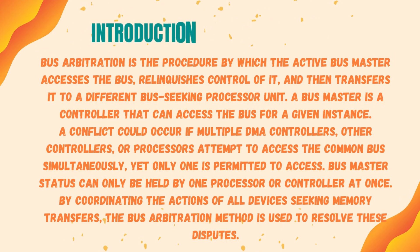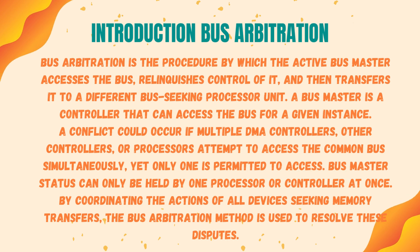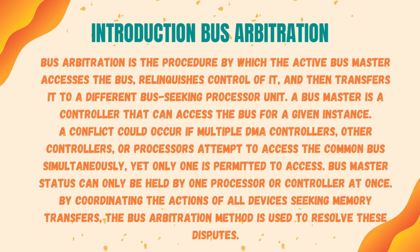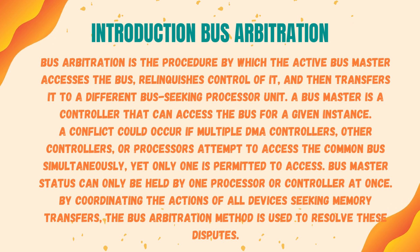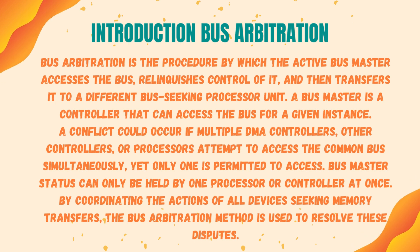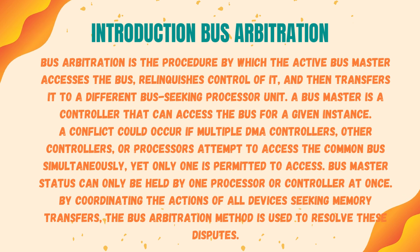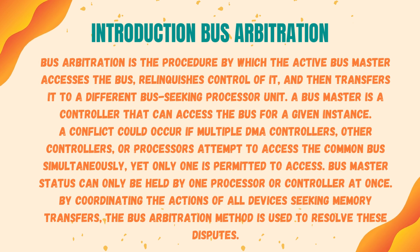Bus arbitration is the procedure by which the active bus master accesses the bus, relinquishes control of it, and then transfers it to a different bus-seeking processor unit. A bus master is a controller that can access the bus for a given instance. A conflict could occur if multiple DMA controllers, other controllers, or processors attempt to access the common bus simultaneously, yet only one is permitted to access. The bus arbitration method is used to resolve these disputes by coordinating the actions of all devices seeking memory transfers.